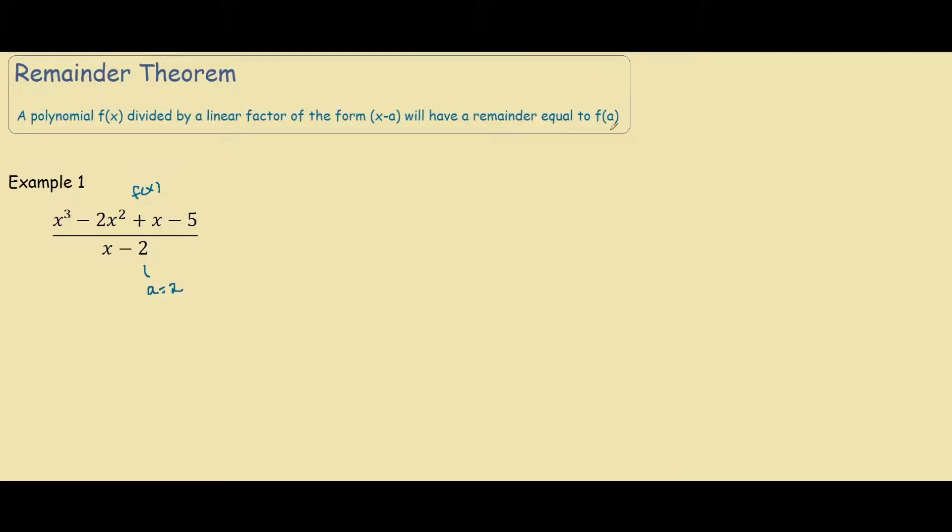It says that our remainder will be equal to f(a). So our f(a) is simply plugging 2 into our function. So we get 2 cubed minus 2 times 2 squared plus 2 minus 5.